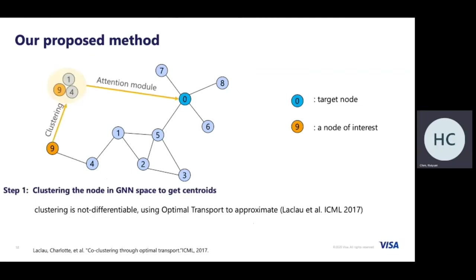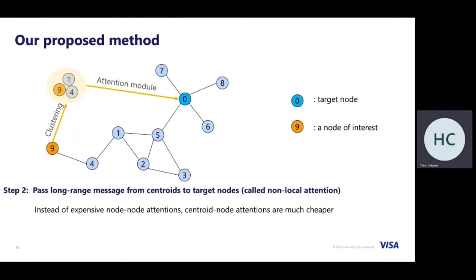Next, we explain our algorithm step by step. In step one, we cluster nodes in the GNN embedding space — in each GNN step, we have embeddings for each node, and we apply a clustering technique to obtain centroid representations. However, clustering is not differentiable and cannot be end-to-end trained with GNN. In this work, we adopt an existing technique called soft assignment pooling to approximate this clustering. In step two, we pass long-range messages from centroids to the target node, which is called non-local attention.